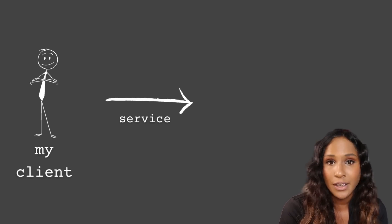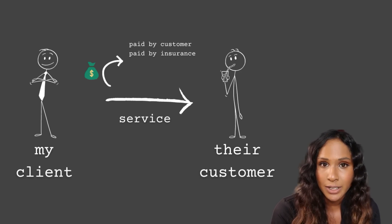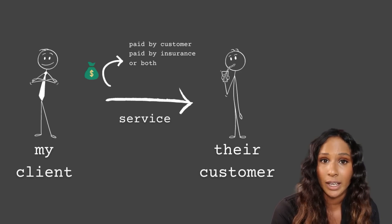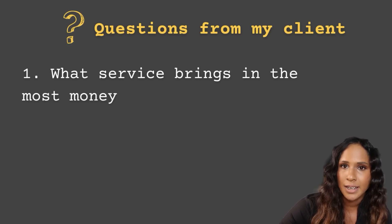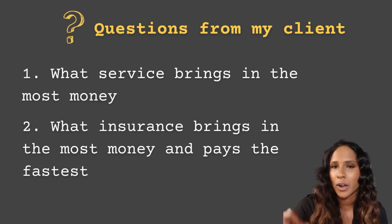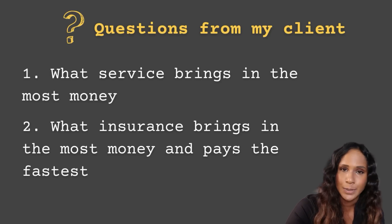I have seen the data set before, and what I need to do is just have a look at the data set, analyze it, and answer the questions. What this client does is the client provides a service to customers, and the service can either be paid by the customer themselves or by the insurance, or maybe a bit of both, depending on their insurance cover. So what the client wants to know is what service brings in the most money, what insurance brings in the most amount of money, and what insurance actually pays the fastest — because obviously they would want to work with that insurance provider if they bring in the most money and if they pay quite quickly.